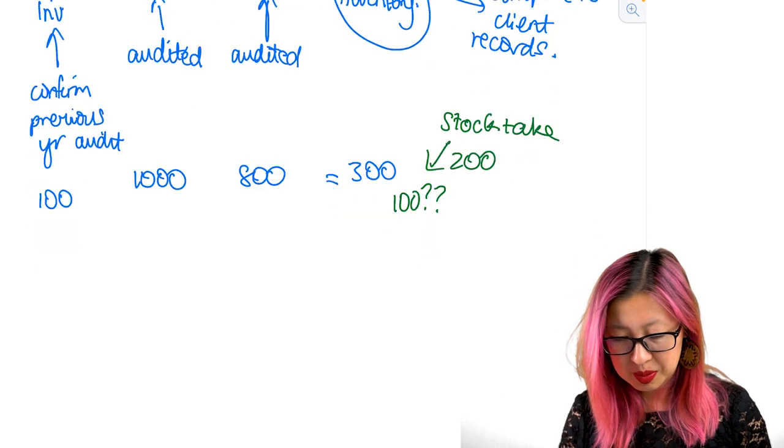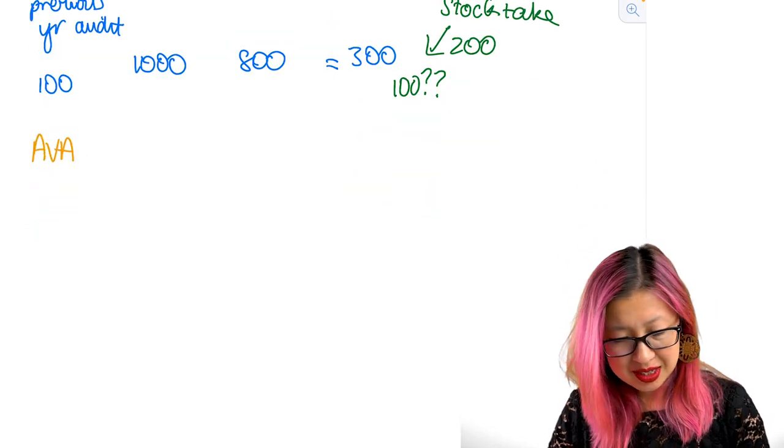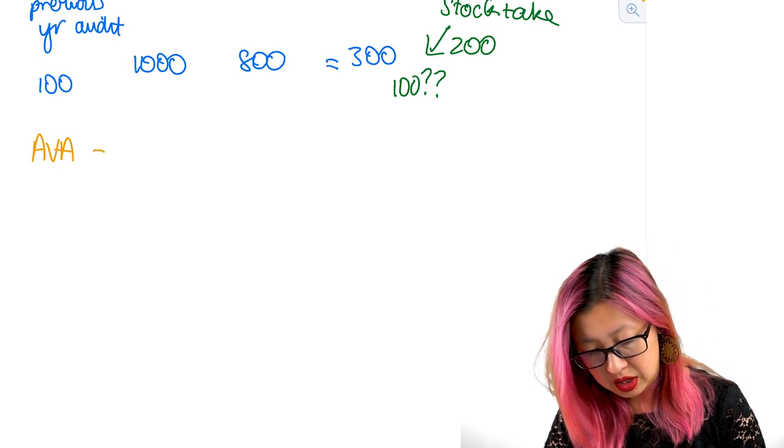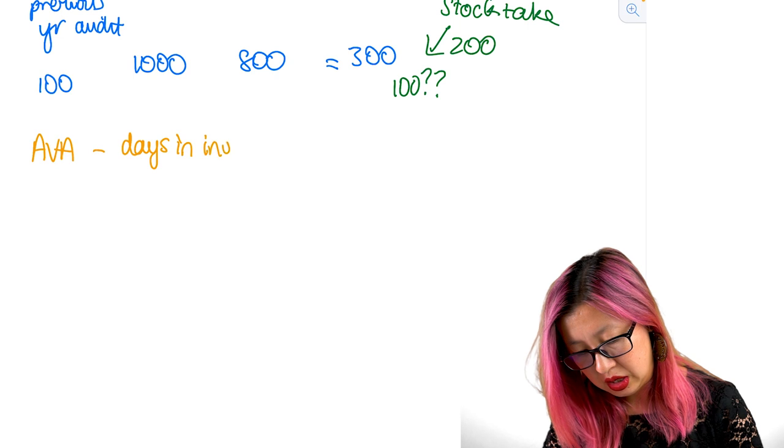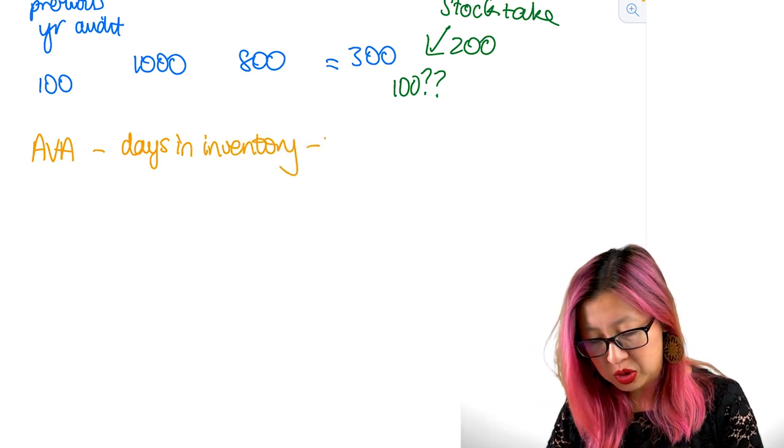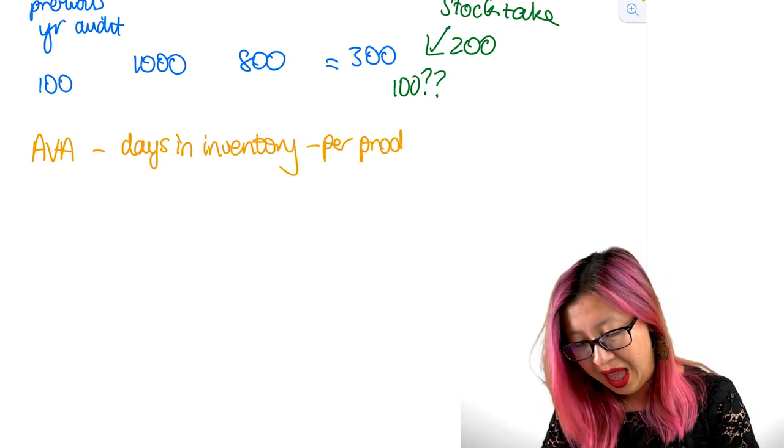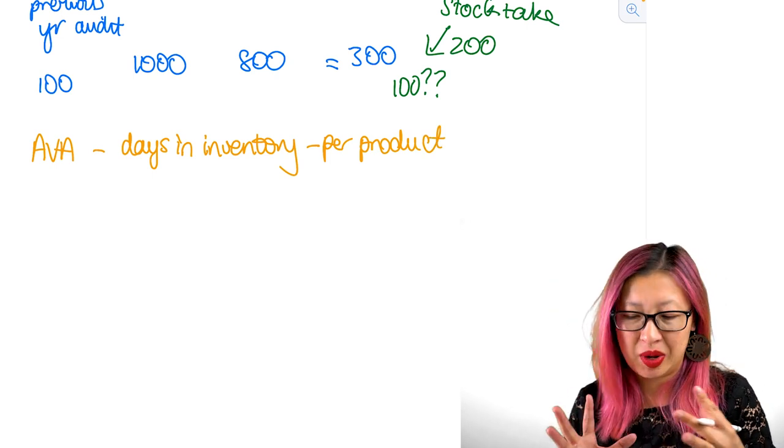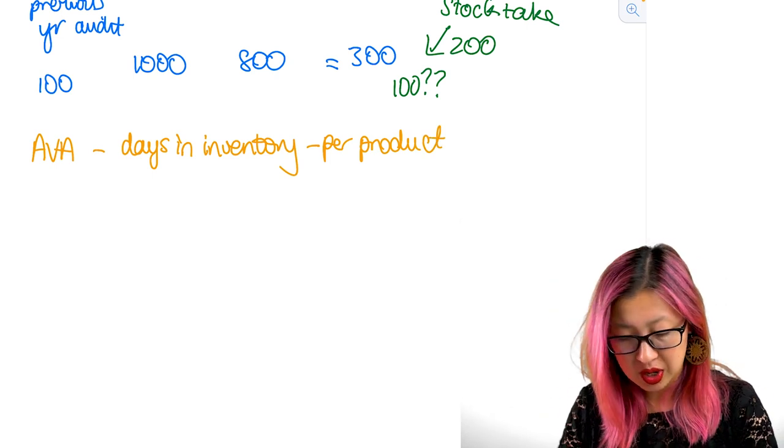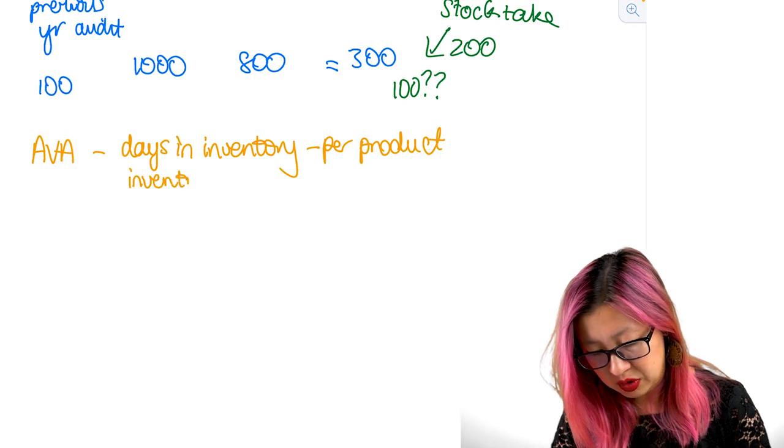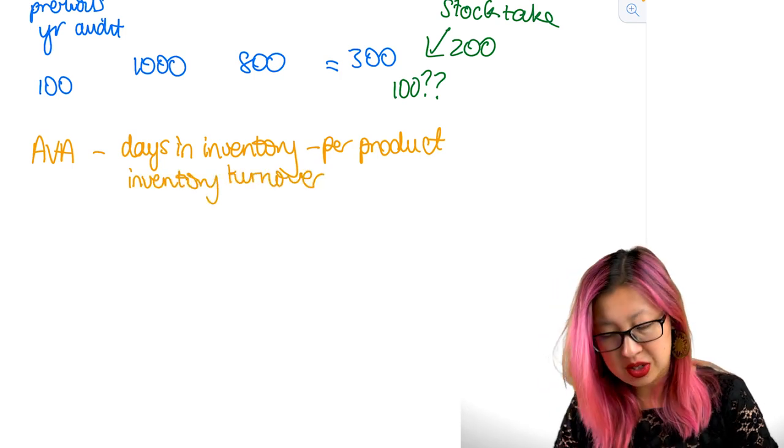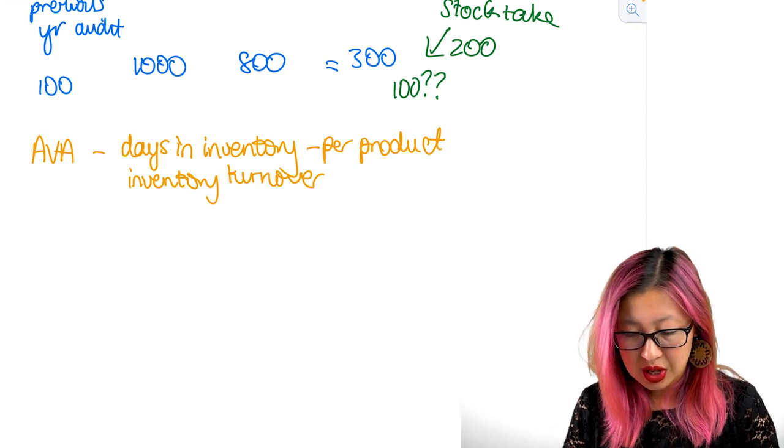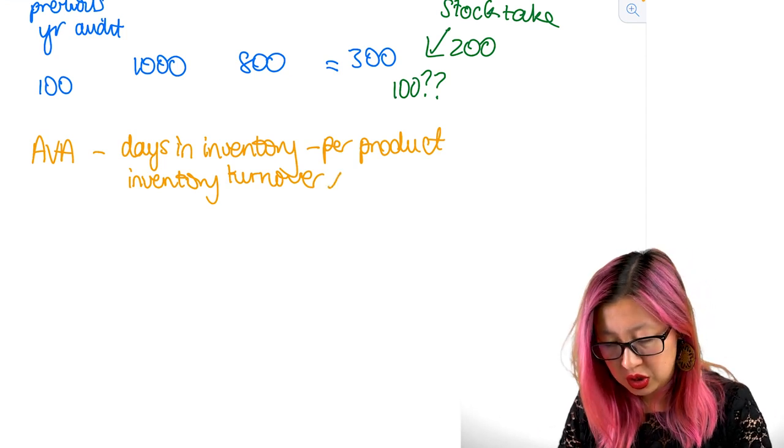I can also use substantive analytics to help me with my accuracy valuation and allocation. So if we dig into AVA, I could do things like days in inventory. So how long, and we would do that per product. How long does it take me to sell something? And if there's something that's been really slow, so either days in inventory or inventory turnover, because they essentially tell you the same thing just in different calculations.